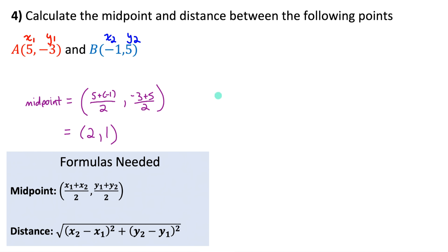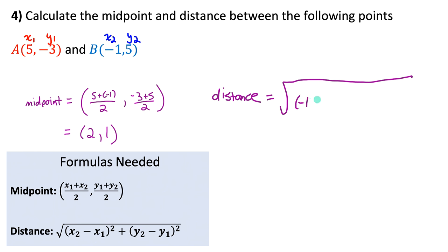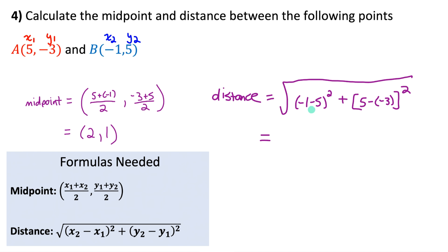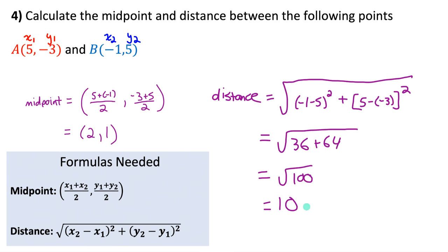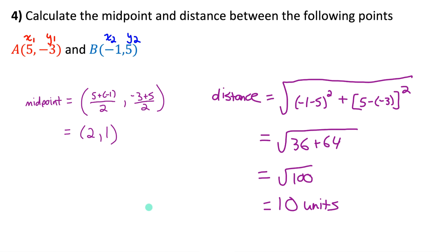Using the distance formula with x₂ − x₁ = −1 − 5 = −6, squared = 36, and y₂ − y₁ = 5 − (−3) = 8, squared = 64. So the distance is √(36 + 64) = √100 = 10. The distance between the two points is 10 units.